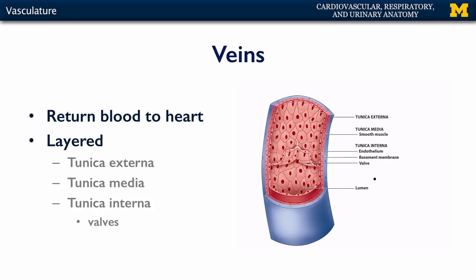Muscular venules feed into veins. Veins, by definition, are vasculature that returns blood to the heart. Like arteries, veins have three layers: a tunica externa, very similar to that of arteries; a tunica media, which unlike arteries is typically very thin; and a tunica interna of simple squamous epithelium supported by a basement membrane. There are no elastic laminae in veins. Also, some veins have involutions or infoldings of that simple squamous epithelium so that a valve is formed. These valves promote the unidirectional flow of blood.